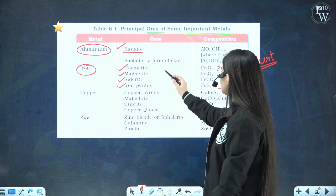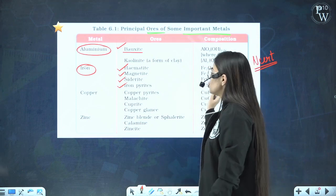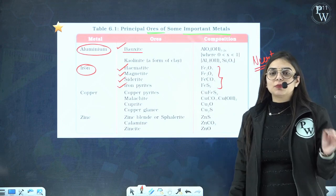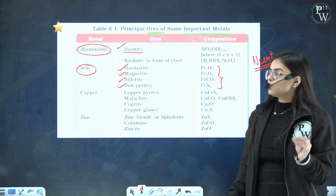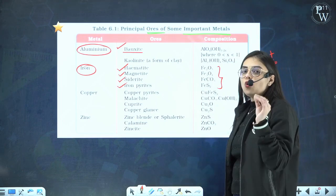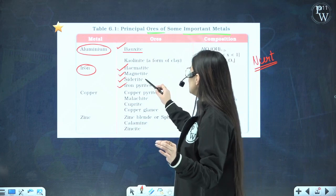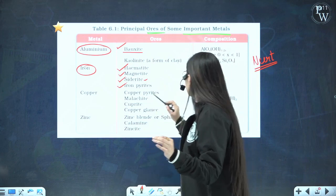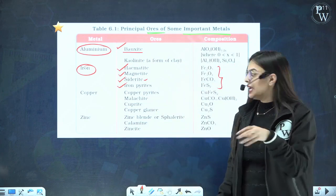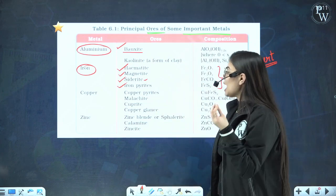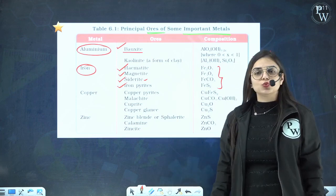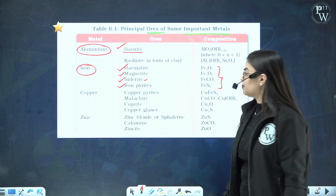Hematite has composition Fe2O3. Magnetite has composition Fe3O4. Siderite has composition FeCO3. Iron pyrite has composition FeS2.